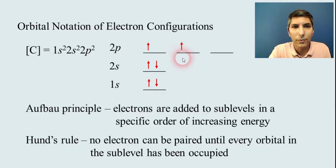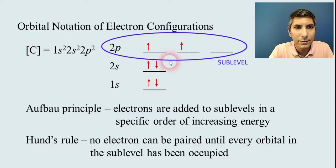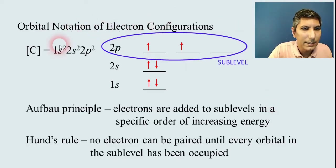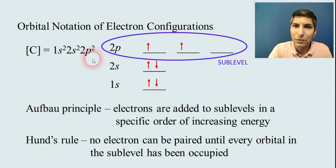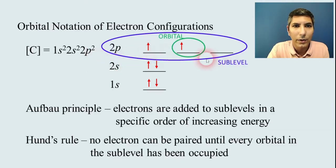So that's the orbital notation when you draw the arrows on the lines. Now there is some vocabulary that we need to be aware of. We've already talked about energy levels—we have the one and the twos here, those represent energy levels. But the s's and the p's represent sublevels. And so this 2p as an example, we call that the 2p sublevel. Every one of these sections in the electron configuration represents a sublevel.